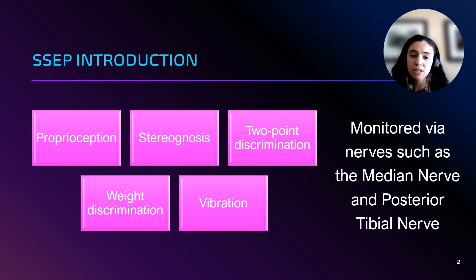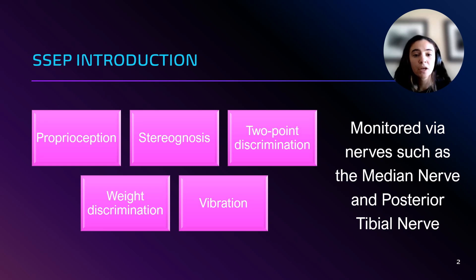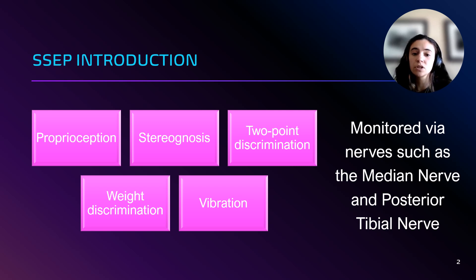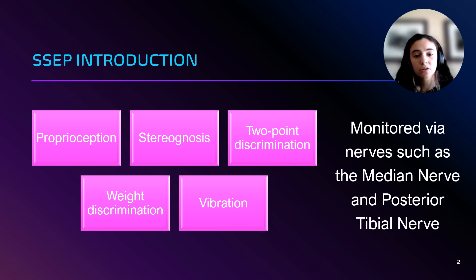As we discussed in class, there are five main sensations that our somatosensory pathways can detect: proprioception, stereognosis, two-point discrimination, weight discrimination, and vibration. These sensations create SSEPs, and SSEPs are often monitored using two primary nerves — the median nerve for the upper extremities and the posterior tibial nerve for the lower extremities.